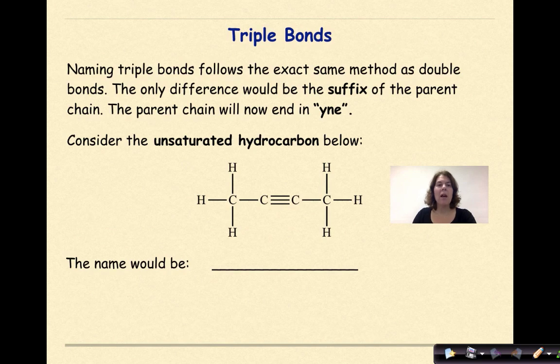Now let's talk about triple bonds. Naming triple bonds follows the exact same method as double bonds. The only difference would be that the suffix of the parent chain will now end in Y-N-E. Consider the unsaturated hydrocarbon below. So again the first thing that we always need to do is look at where the triple bond is located and decide where to start numbering our carbons from. And in this case it really doesn't matter because again it's right in the middle.